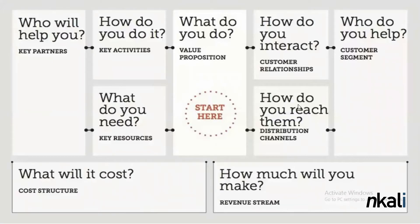The next part of the building block is the distribution channel — how are you going to reach this customer? Where are you going to reach them? Are they online? Are they offline? Are you going to meet them in both places? Are you going to have a distributor network or affiliate marketers? There are so many distribution channels you can leverage right now to reach your customers, and this is where you put it in your business model canvas.